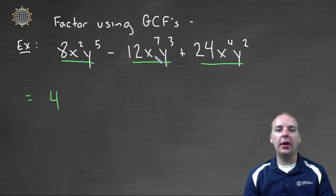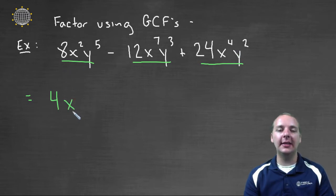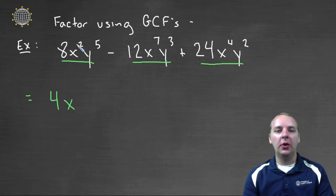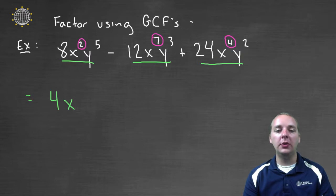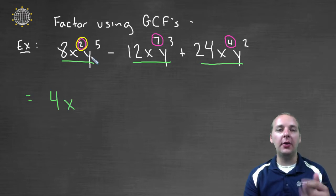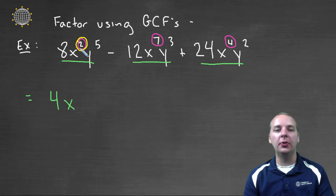Then I have x squared, x to the seventh, and x to the fourth. Since all three have an x, there's at least an x in the GCF. We always choose the variable with the lowest exponent — x squared — because once those are factored out, this term doesn't have any more x's available. So I only have x squared available for the GCF.